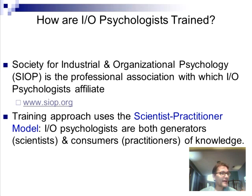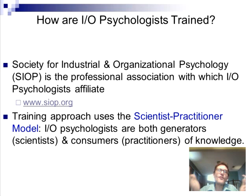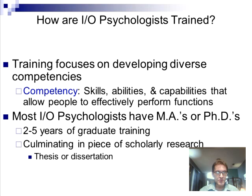IO psychologists are trained in the scientist-practitioner model, the same model that formed the basis of clinical psychology. In order to practice a field, you must first be a scientist and understand that field. Think of it this way: if you take your car to a mechanic and the mechanic says, 'I'd love to fix your car, but I don't exactly understand how an internal combustion engine works' — that's a problem. If you don't understand how the engine works, you have no business trying to fix the car. Similarly, in IO psychology, if you're not first a scientist, you have no business trying to apply what you don't first know.